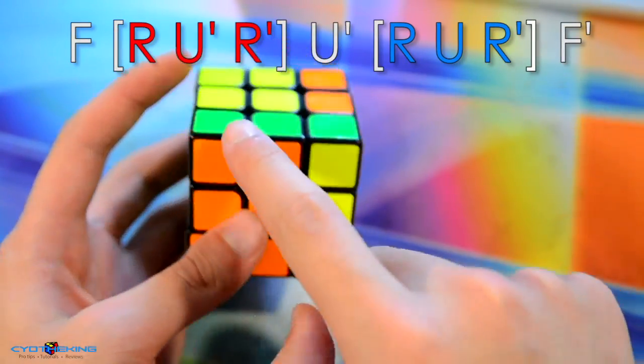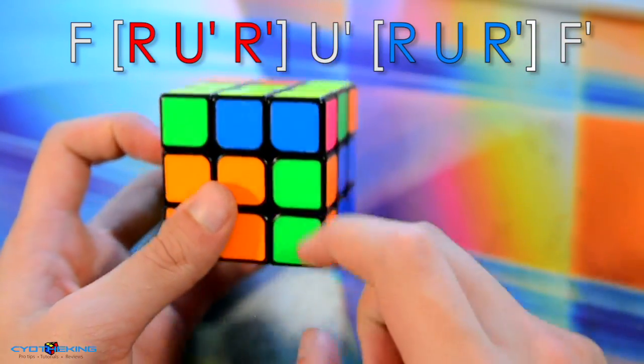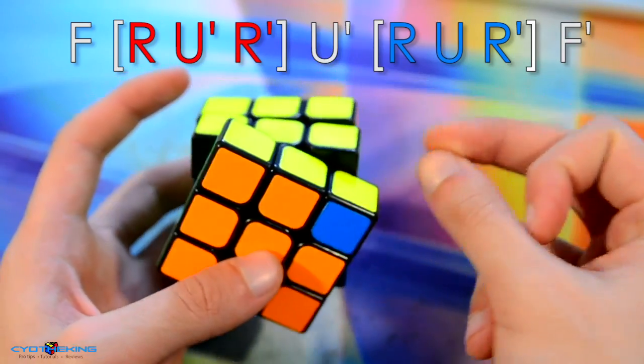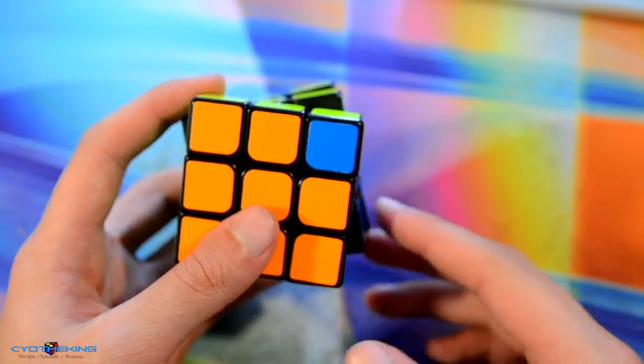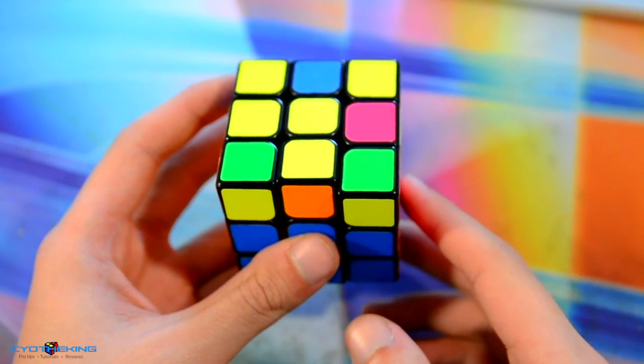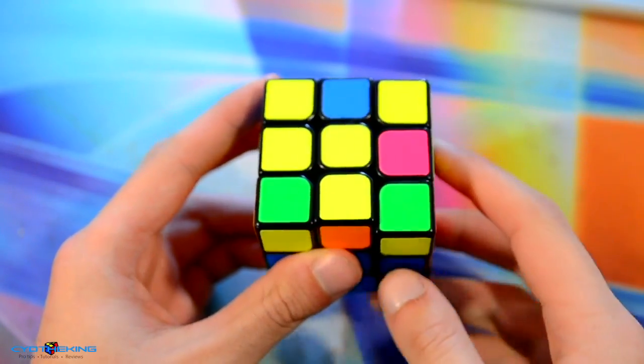Another good example of that would be this alg right here. It's just F and then you're inserting this F2L pair right here, adjusting the top layer U prime, and then putting this F2L pair right back where it was. So just some basic pair tracking right there that I think is really easy.